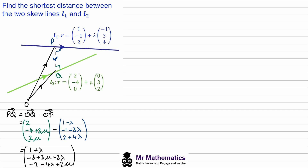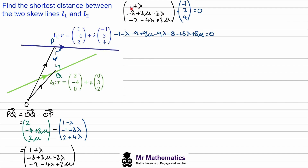The reason we found this is because it describes the direction from P to Q, and we know that this is at right angles at its shortest point. So the direction vector of P to Q dotted with the direction vector of line L1 will equal zero, because we'll have a cosine of 90. We've got the direction vector of P to Q dotted with the direction vector of line L1 equaling cos(90°). Dotting these two together gives an equation involving μ and λ: (1 + λ)(−1) + (…)(3) + (…)(4), adding them together.